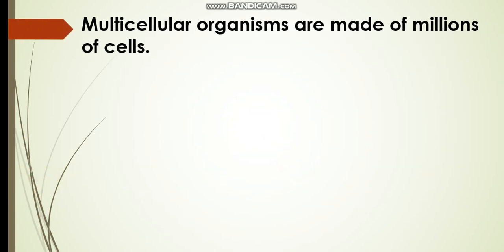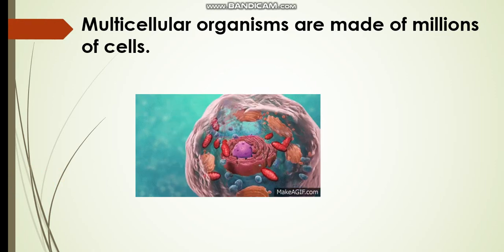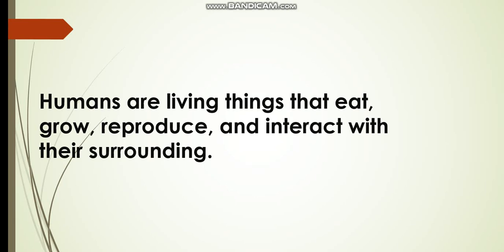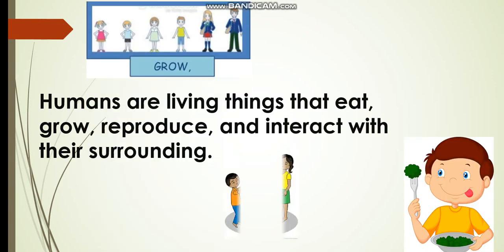Multicellular organisms are made of millions of cells. Humans are living things that eat, grow, reproduce, and interact with their surrounding.